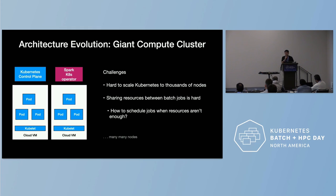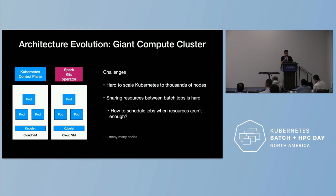One issue is that it's really hard to scale Kubernetes with thousands of nodes — we tried, but after 1,000 nodes we saw a lot of problems and we don't want to deal with that. The second challenge is that sharing resources between batch jobs is really hard. When all user jobs are on the cluster, users are constantly competing for resources and teams are complaining about not getting resources or their jobs being starved.